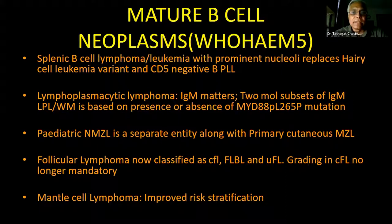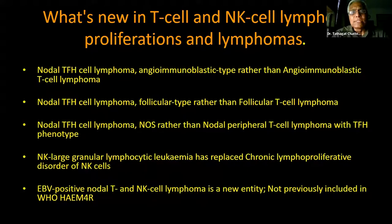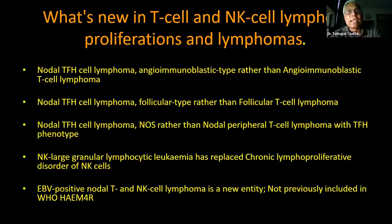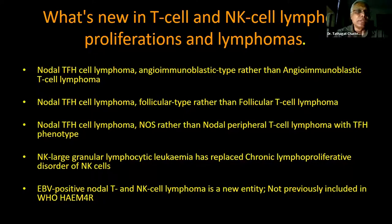Follicular lymphoma is now classified as classical follicular lymphoma (CFL), follicular large B-cell lymphoma, and unclassified follicular lymphoma. Grading in classical follicular lymphoma is no longer mandatory as it does not affect treatment. Improved risk stratification has come for mantle cell lymphoma. For T-cell and NK-cell lymphoid proliferations: the nodal T-follicular helper cell lymphoma — angioimmunoblastic type — has replaced the term angioimmunoblastic T-cell lymphoma (AITL). Similarly, nodal TFH cell lymphoma follicular type has replaced follicular T-cell lymphoma, and nodal TFH cell lymphoma NOS has replaced nodal peripheral T-cell lymphoma with TFH phenotype.